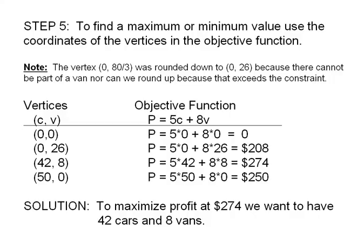So after the rounding, our four vertices are 0,0, 0,26, 42 and 8, and 50 with 0. Plugging each of these into the objective function leads to profits of 0, 208 dollars, 274 dollars, or 250 dollars.